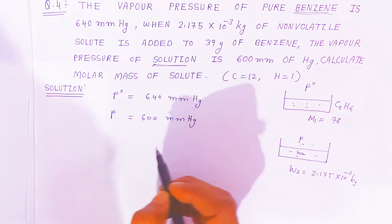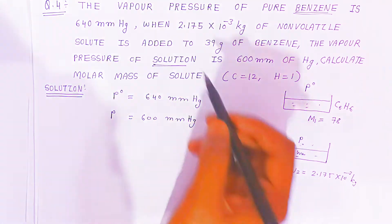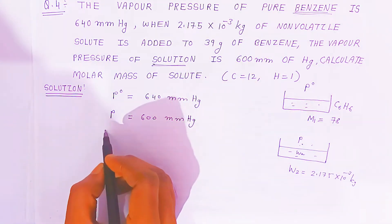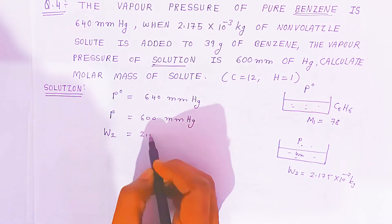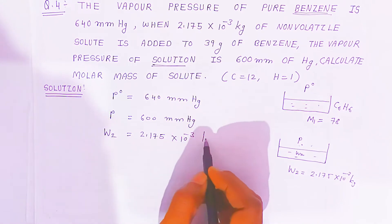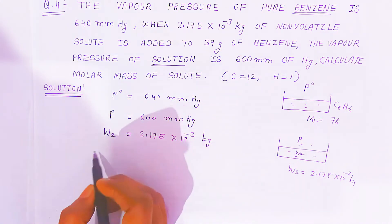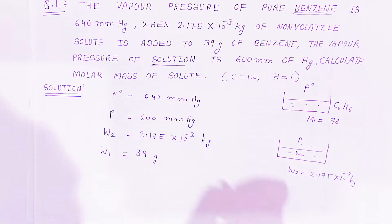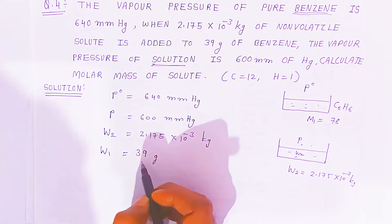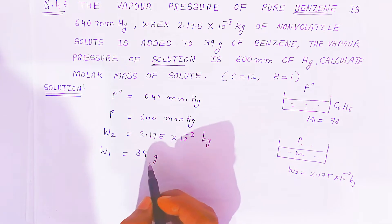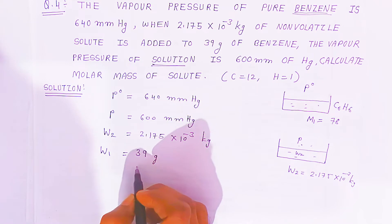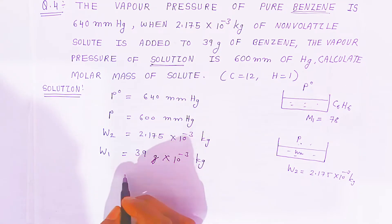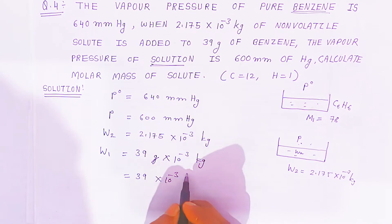The vapor pressure of the solution is 600 mm mercury and the vapor pressure of the solvent is 640 mm mercury. The weight of the non-volatile solute W₂ is 2.175 × 10⁻³ kg. The weight of solvent W₁ is given as 39 grams. Since W₂ is in kilograms, we convert W₁ to kilograms as well: 39 × 10⁻³ kg.